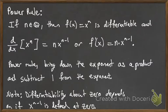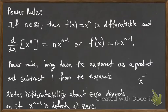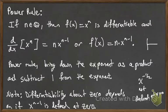In words: the power rule says bring down the exponent as a product and subtract 1 from the exponent. Note that differentiability at 0 depends on whether x^(n−1) is defined at 0. For example, x^(−1/2) is not defined at x=0. The square root of x is defined at 0, but it has a sharp point there — it looks like an eyebrow — so it's not differentiable at 0.